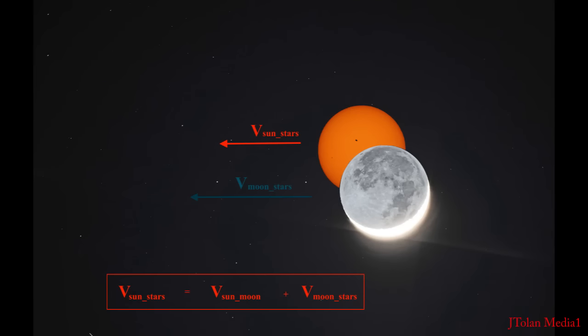Here's the graphic. We will measure the velocity of the sun against the stars by comparing it to the velocity of the moon, and we'll get the velocity of the moon relative to the stars.